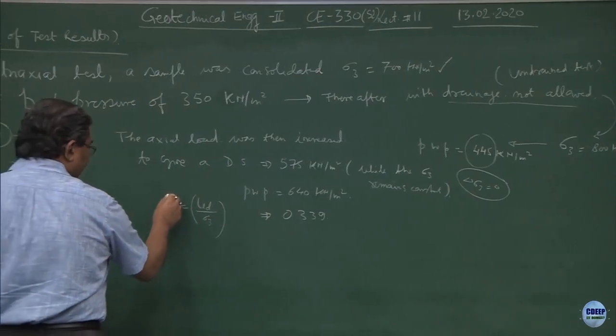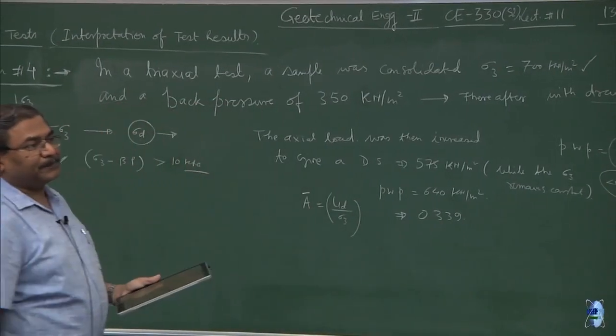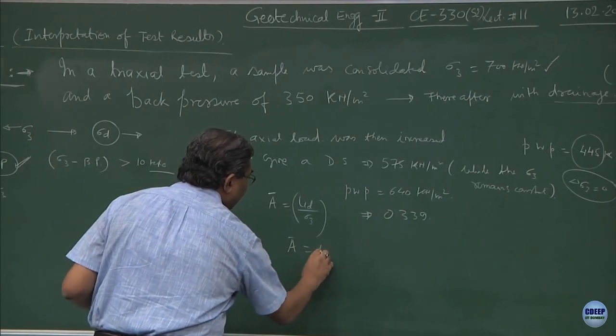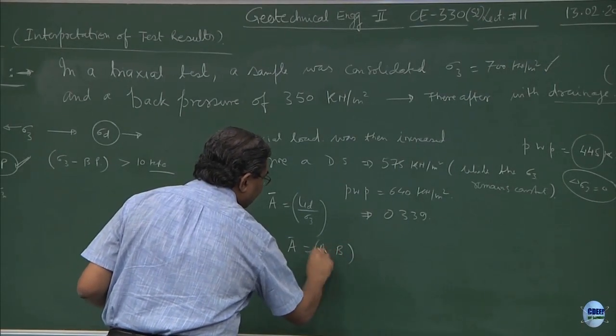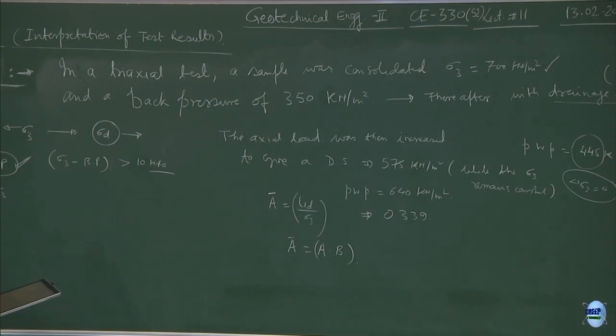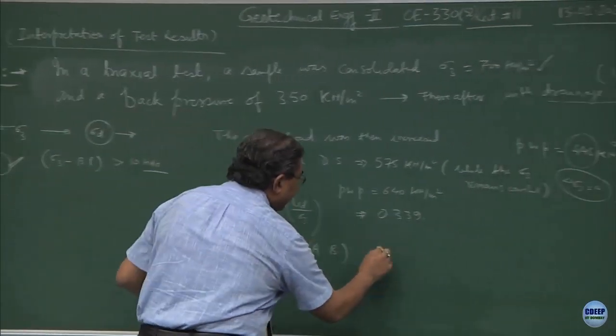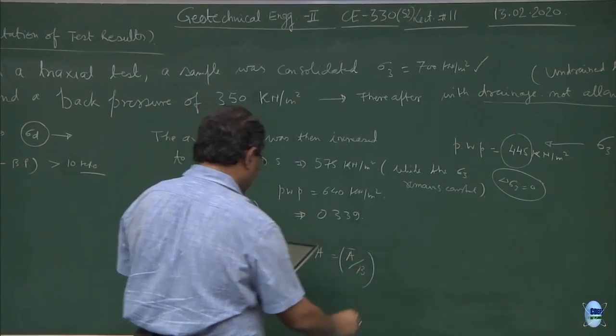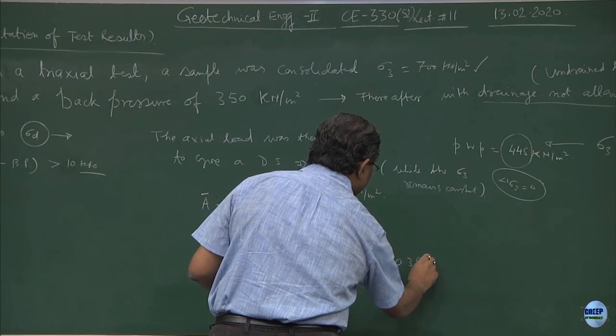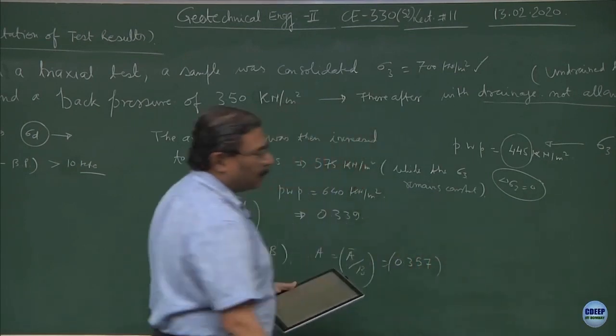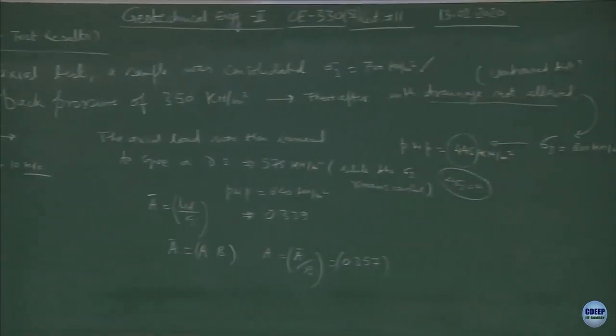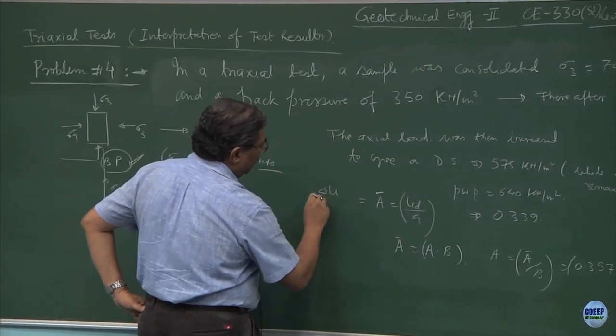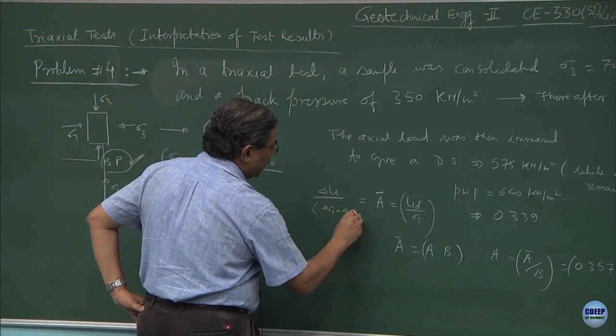This parameter A I will be defining as A prime. A prime will be equal to A into B. From here, I will be getting A as A prime upon B. And this comes out to be 0.357. These are the nomenclatures you have to just remember. A is defined as delta u divided by delta sigma 1 minus delta sigma 3.